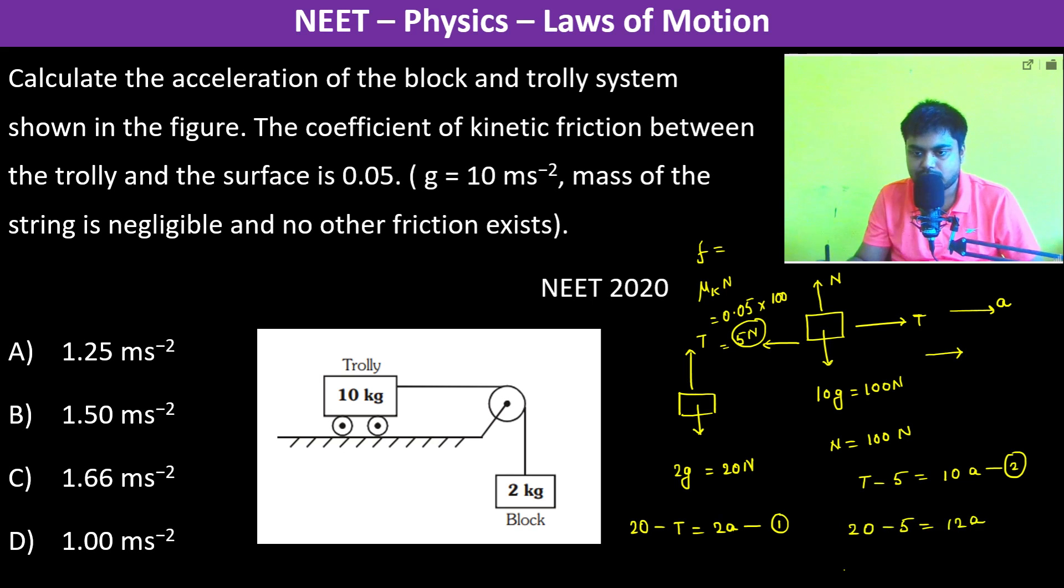So acceleration becomes 15 by 12, which is 5 by 4, which is 1.25 meter per second squared. So therefore the answer is going to be A. Thank you.